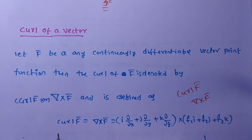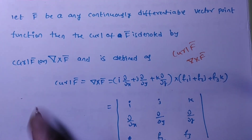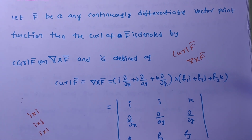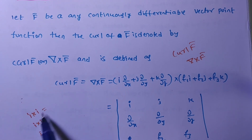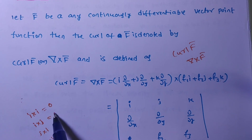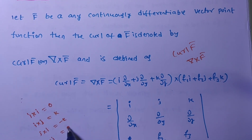Do you remember the cross product of vectors? We have i cross i, i cross j, j cross i, j cross j, i cross i — these are the cross products. i cross i is zero. i cross j is k. j cross k is minus k. j cross j is zero.